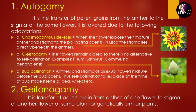The first type is autogamy: the transfer of pollen grains from the anther to the stigma of the same flower. It has three adaptations. The first is chasmogamous devices, where the flower exposes its mature anther and stigma directly to the pollinating agents.